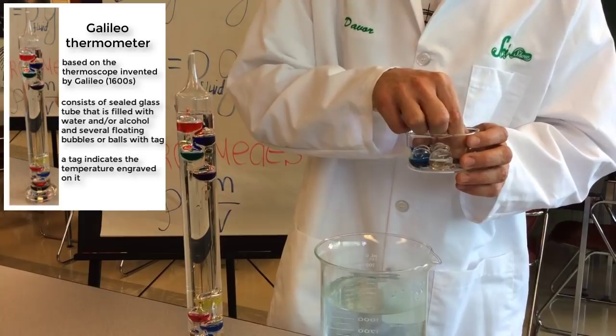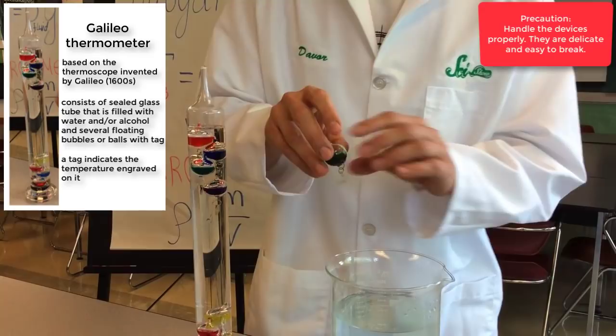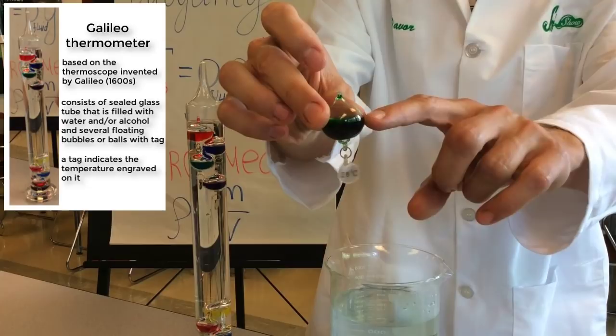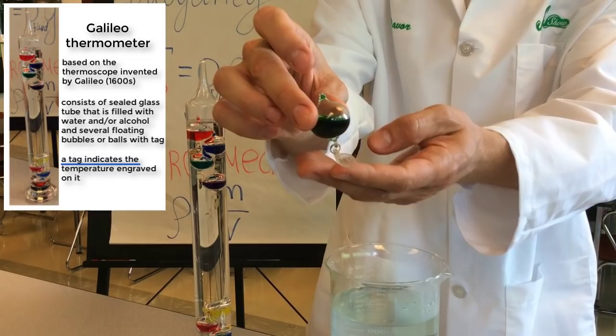Now, we have some here which are from our old one which broke. You should be careful with these, they're very delicate and they can break. So if you look carefully at the ball, you can see that it's made of glass and there's a colored fluid inside. And right at the bottom there's a tag with a temperature on it.